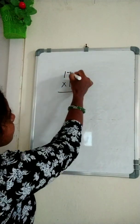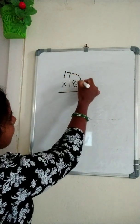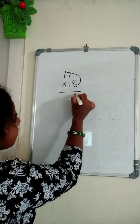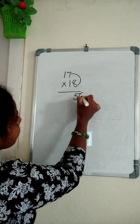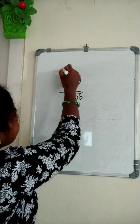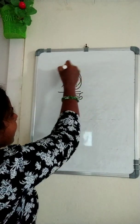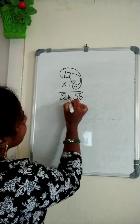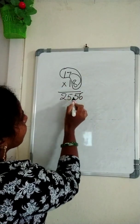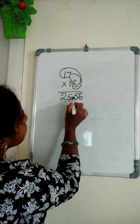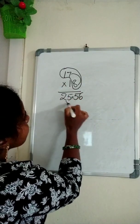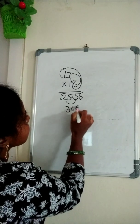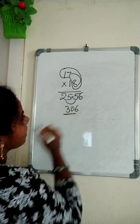See here. First, 8 eights — write 56. 17 plus 8, just add 25. Now 25 plus this 5. 306. That is the answer.